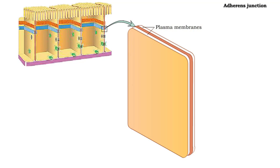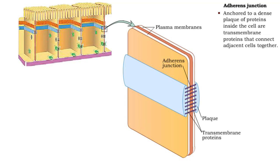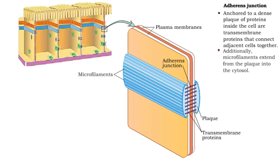Adherence junctions are created when transmembrane proteins, anchored to a dense plaque of proteins inside the cell, connect the adjacent cell membranes together. Additionally, microfilaments extend from the plaque into the cytosol of each cell. The dense adhesion belts help resist separation of epithelial tissues.